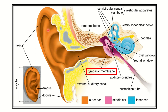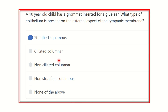In the outer part of the tympanic membrane, as it is a continuation of the external auditory meatus, and the external auditory meatus is a continuation of the external skin, we can see that skin is present from the pinna to the external auditory meatus. This lining is also present on the outer surface of the tympanic membrane, so the outer surface has the same lining as skin or the external auditory meatus.